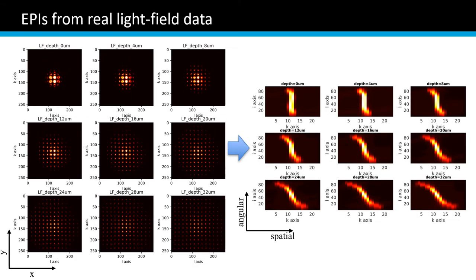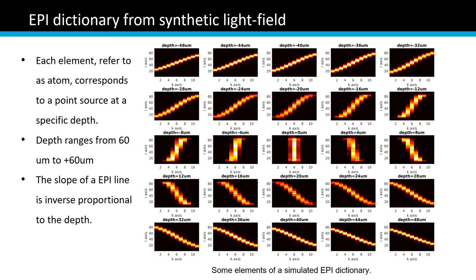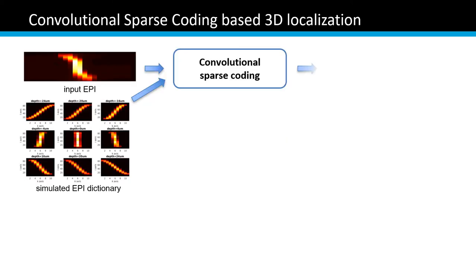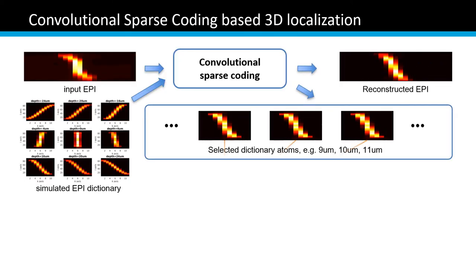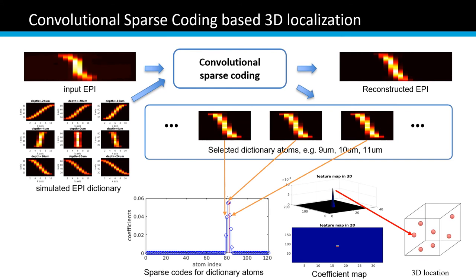Based on this insight, we construct the epi from the real light field data, and also simulate a set of epi for different depths, which is called the epi dictionary. If we input the epi and the synthetic epi dictionary, we use convolutional sparse coding to find matching elements from the dictionary. The elements will indicate the 3D position of the target.